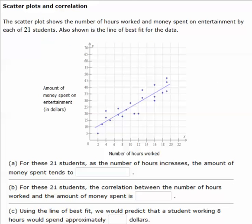So let's look at an example. The scatter plot shows the number of hours worked and money spent on entertainment by each of 21 students. Also shown is a line of best fit for the data. So here's the graph. So they're trying to see if there's a trend between the number of hours a student works and the amount of money that they spend on entertainment.